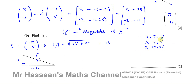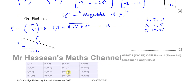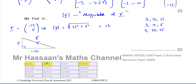Memorizing Pythagorean triples is very useful for this syllabus. There's a table showing more of them, but the most commonly used would be 3, 4, 5 and 5, 12, 13, and 7, 24, 25. Knowing these lets you answer such questions immediately. Once you see that you need the square root of 5 squared plus 12 squared, you know straight away the answer is 13.